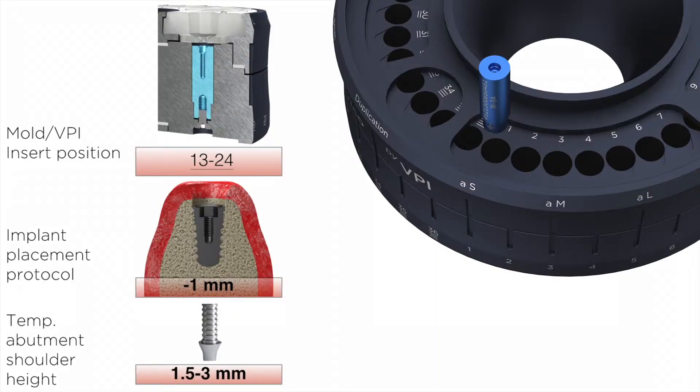Sockets number 15 to 28 can receive the VPI prosthetic connection insert, the last being one millimeter sunk into the sockets. This is particularly useful if your clinical protocol involves one millimeter sub-crestal implant placement.